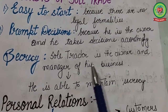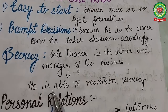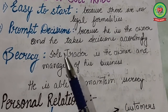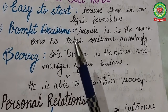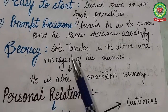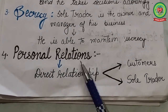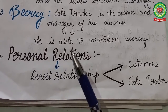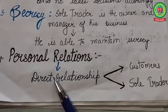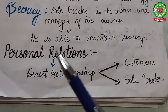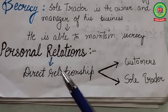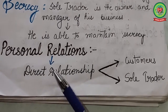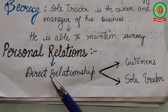Next is secrecy — the sole trader is the only owner and manager of the business, so he is able to maintain secrecy and work according to his own choice. Next is personal relationships — the sole trader is in a position to attract customers by having a direct relationship with them, which allows him to judge the taste and demand of the customers.